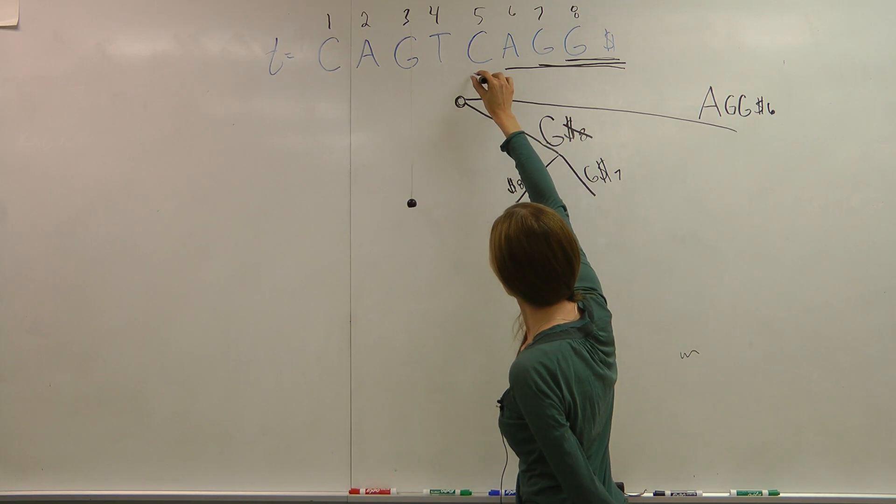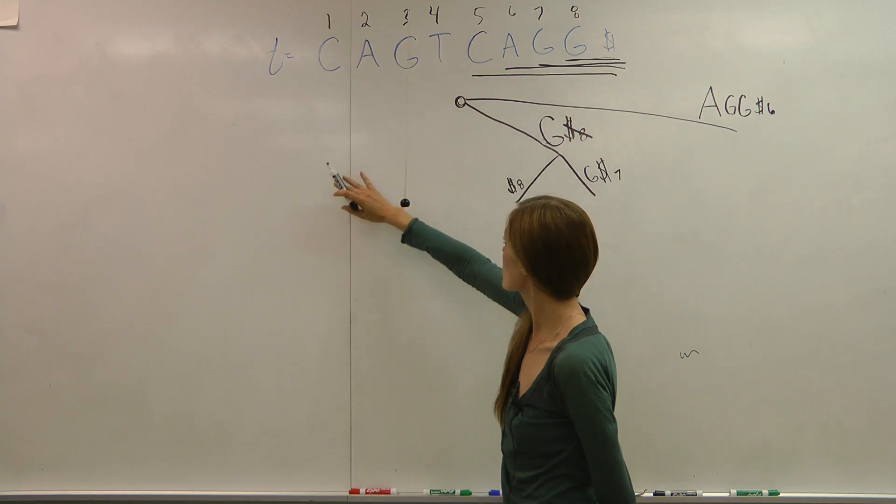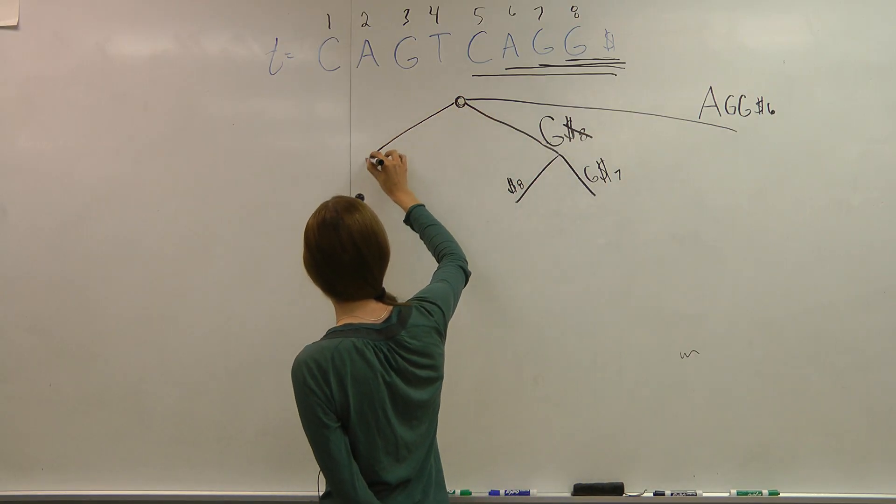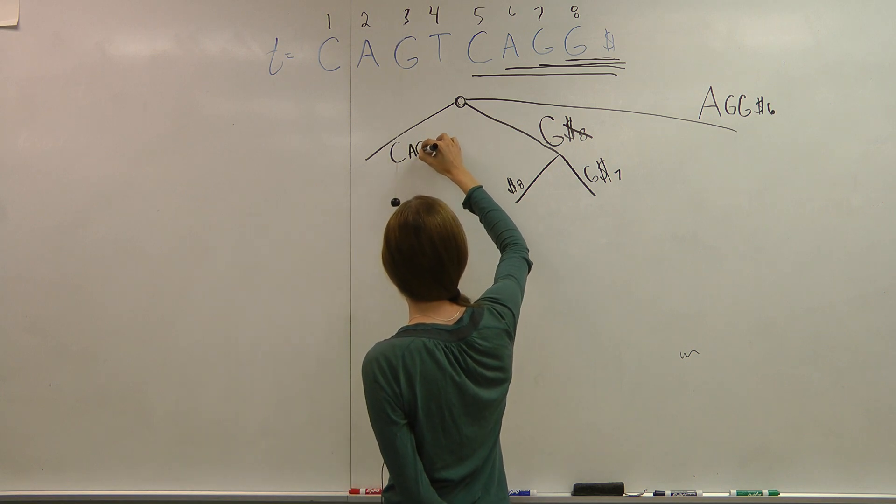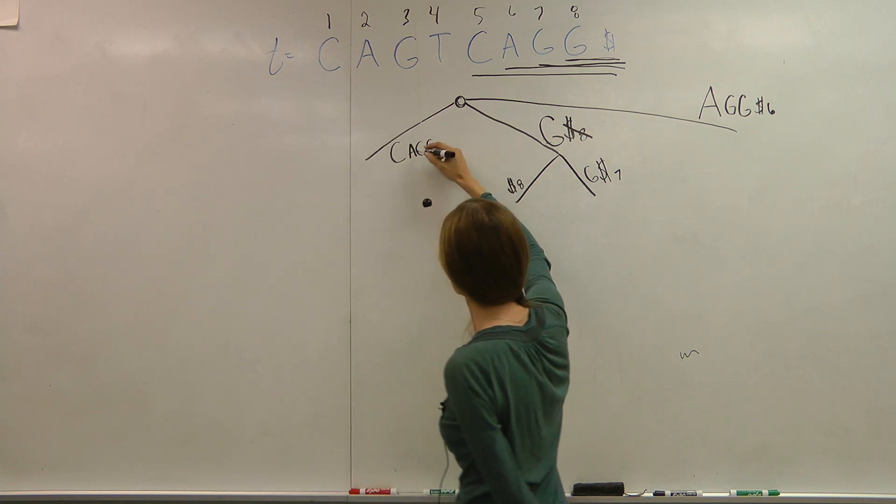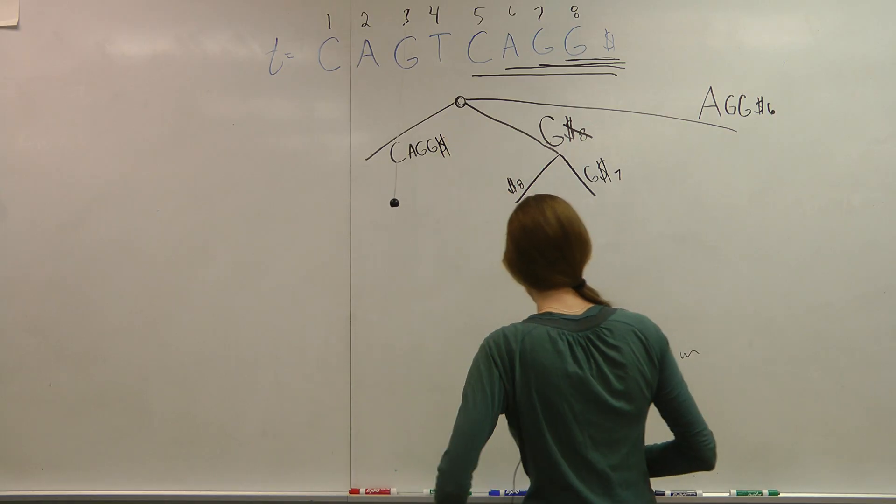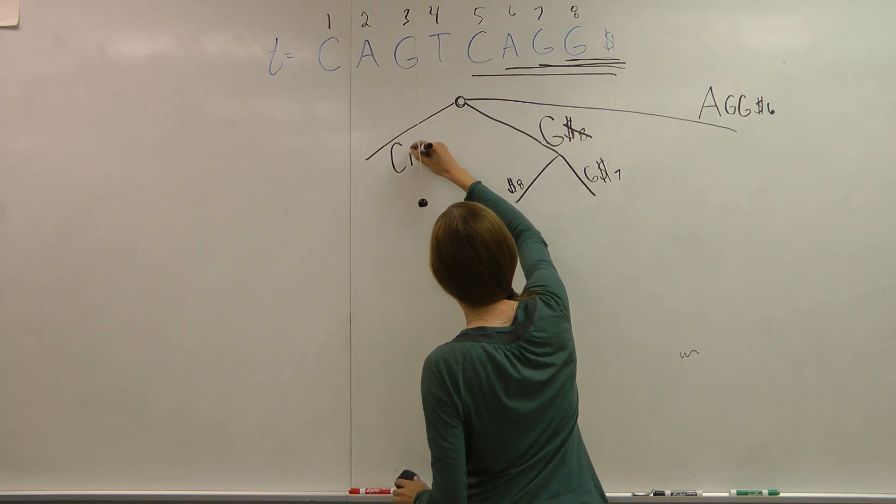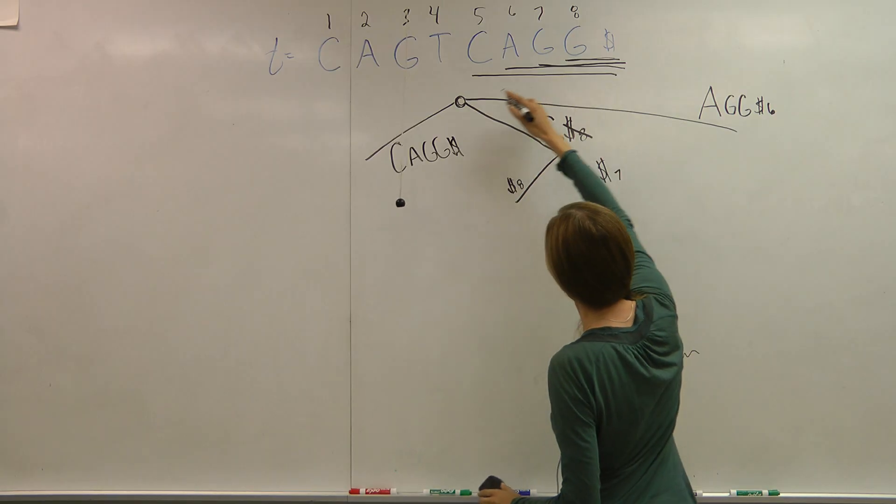I go to my next one, C-A-G-G. I check for a C branch. There isn't one, so I'll go ahead and create one. And again, I'll just put the full suffix there because right now, I'll assume that's the only thing that starts with C. C-A-G-G dollar sign, and that starts at index five.